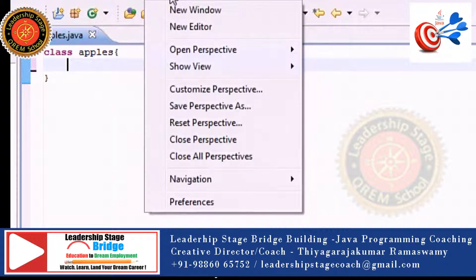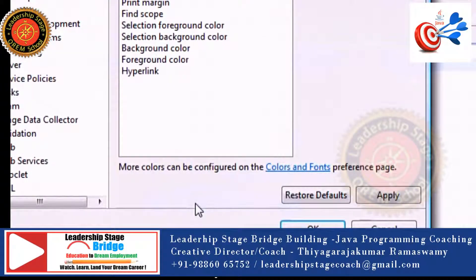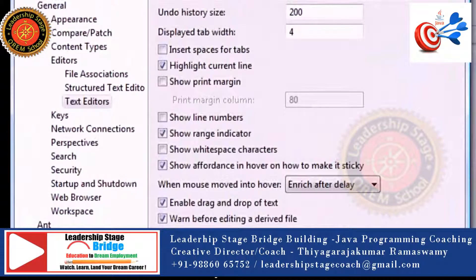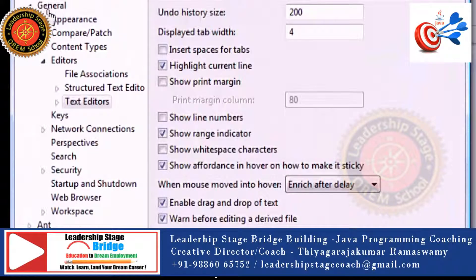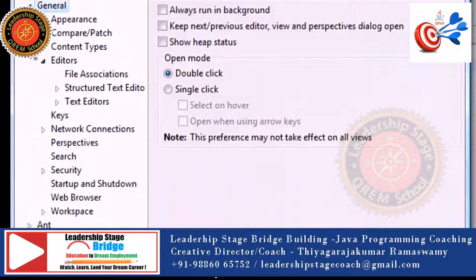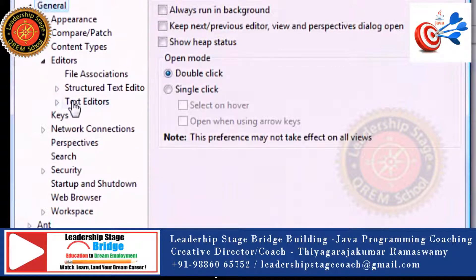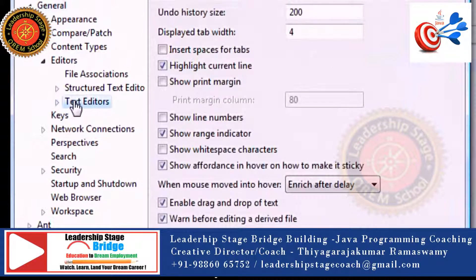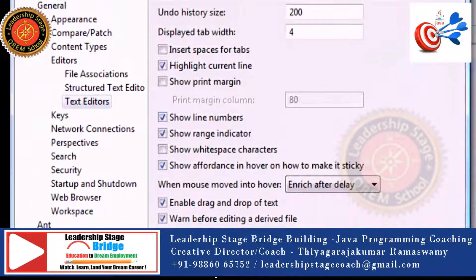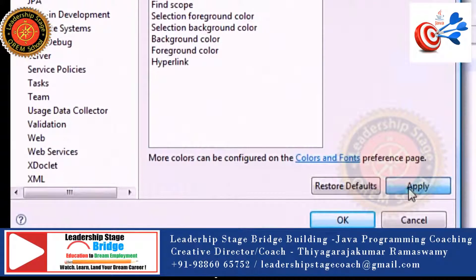In your Window tab at the top, go ahead and click on Preferences and your preferences tab is going to pop up. Go ahead and expand General, Editors, Text Editors, and once you click that it's going to have something that says Show Line Numbers. Go ahead and click Show Line Numbers and click Apply.